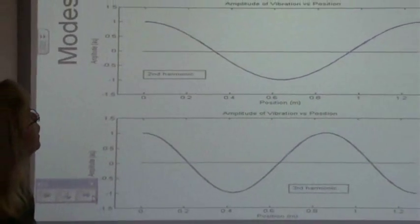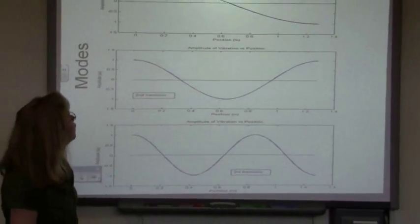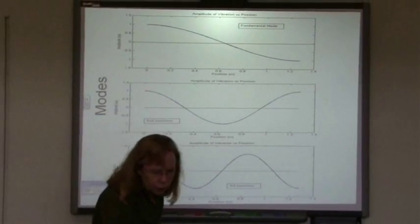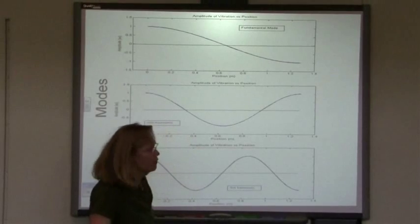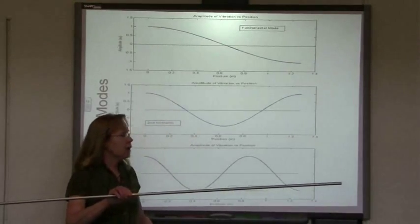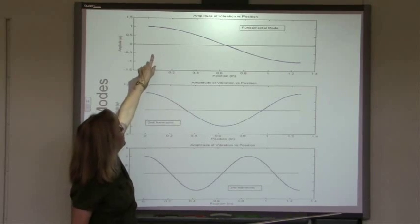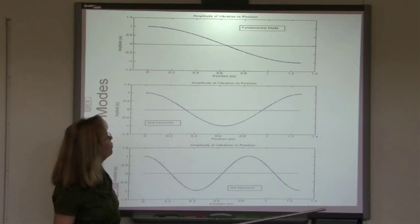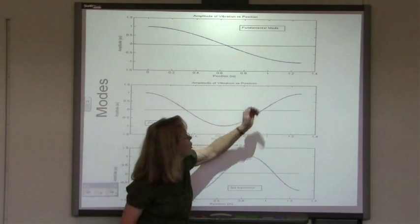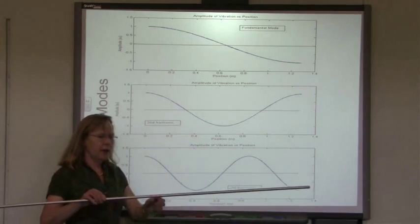To understand why that happens, it's necessary to look at what it means to have a standing wave on this rod. And in these plots, what I've done is I've plotted the amplitude of the mode as a function of the position on the rod. And again,